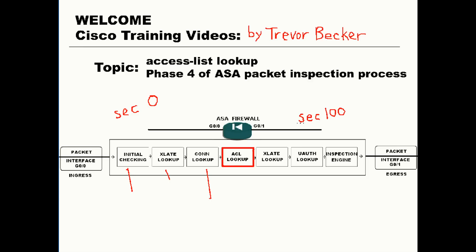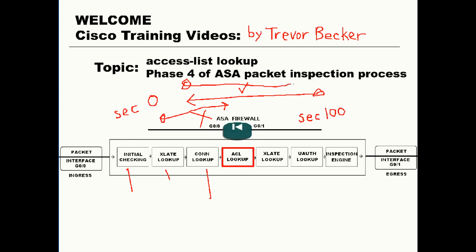Traffic sourcing from a higher security level destined to a lower security level is permitted. But traffic sourcing from a lower security level going to a higher security level is denied. The only situation when traffic going from a lower security level to a higher security level is permitted is when it's returned traffic from a connection that was originated and initiated by a higher-level security interface.